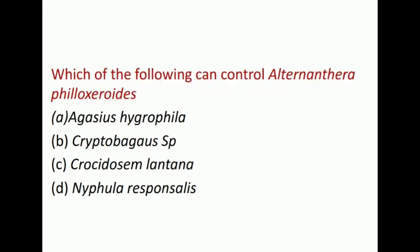Now the last question is: Which of the following can control Alternanthera philoxeroides? The options are Agasicles hygrophila, Cryptobagus species, Crocidomera lantana, Nymphula responsalis. The correct answer is Agasicles hygrophila.